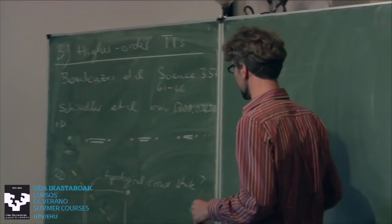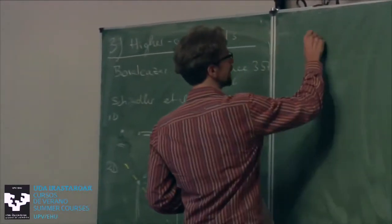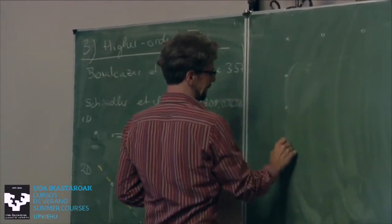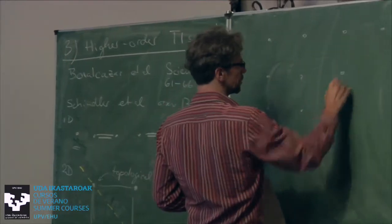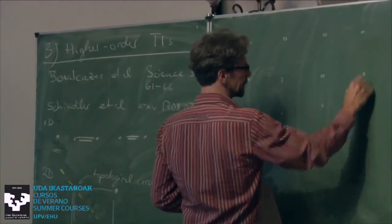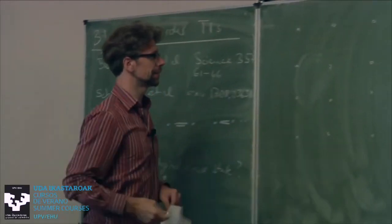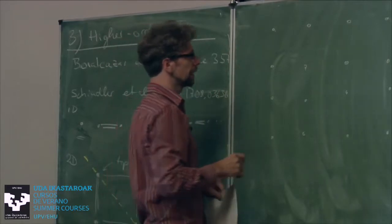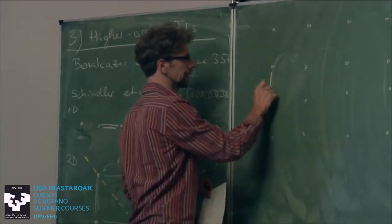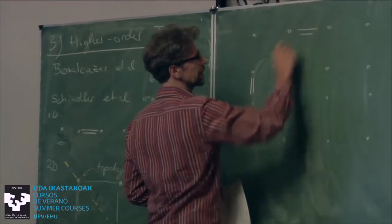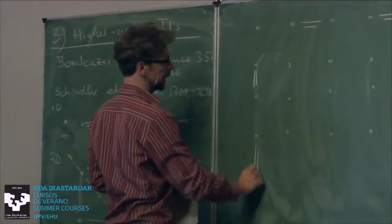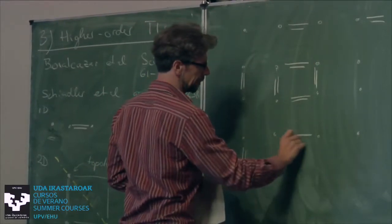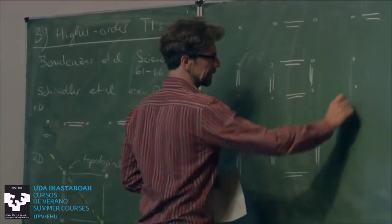Starting from a 2D lattice, we want to dimerize it in such a way that we passivate everything in the bulk and on the edges, leaving only the corner unpaired. We can think of making bonds along the edges so that all edge sites are paired, and then making bonds in the bulk so everything in the bulk is paired — leaving just the corner.